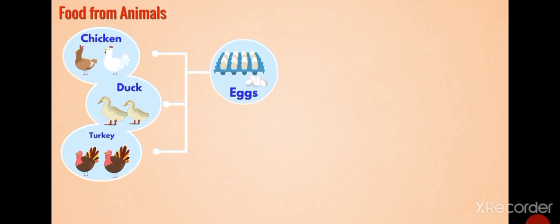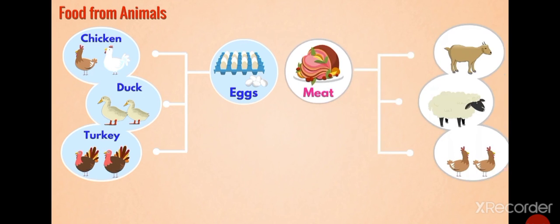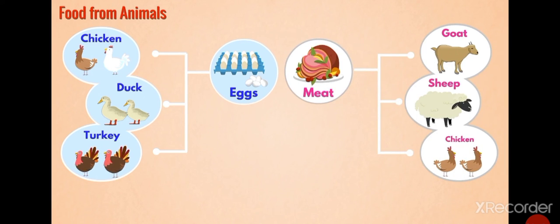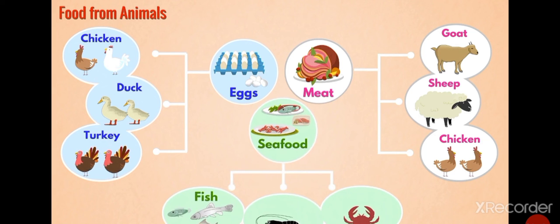We obtain eggs from chicken, duck, turkey, etc. We obtain meat from goat, sheep, chicken, etc. Most of the population rely on seafood for the food. Seafood is obtained from fish, prawns, crabs, etc.